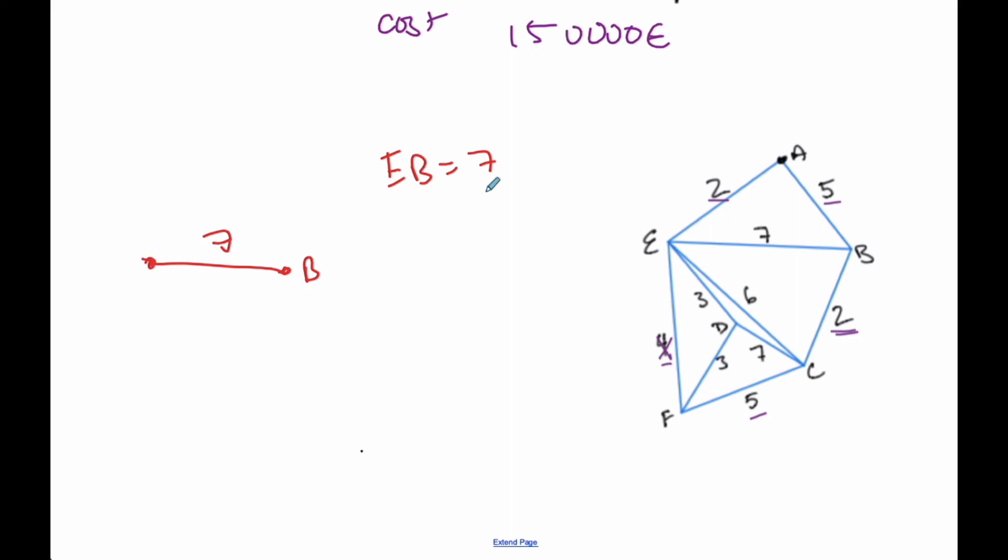From there, then I go look for the smallest. I can choose this 2 or this 2. I'll do B, C this time. So I get 2 and C. So I have B, C is 2. Then I'm going to go up here to A. That's also 2. That's the next shortest one.